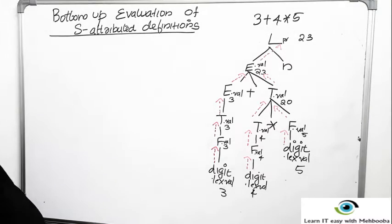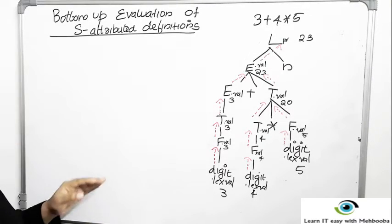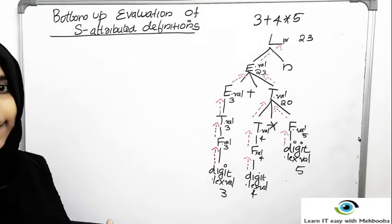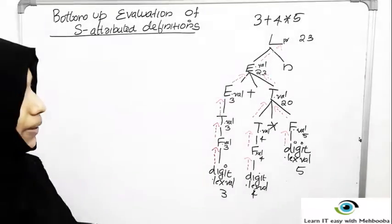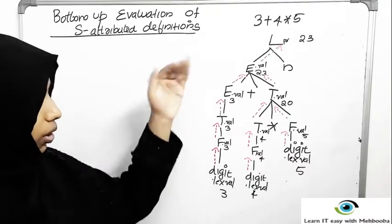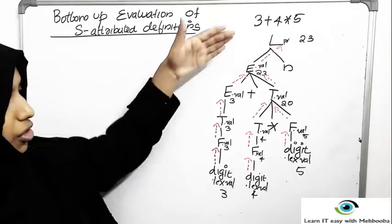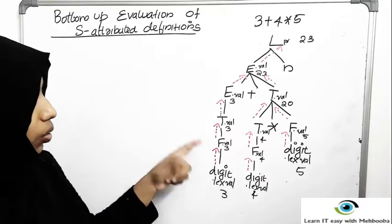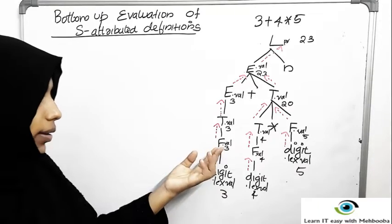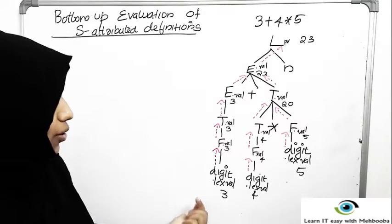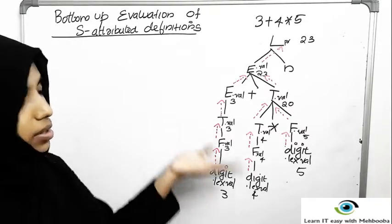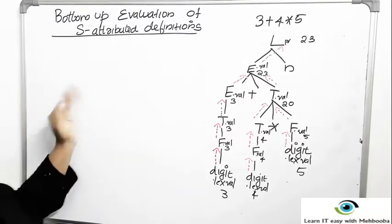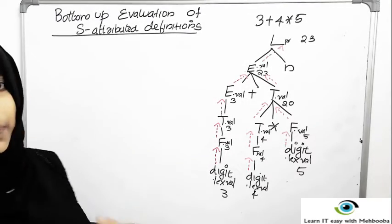In this video we will see the bottom-up evaluation of S-attributed definitions. This is an example discussed in previous videos as an example for S-attributed definitions, because it only has synthesized attributes — all grammar symbols derive their attribute values from their children.